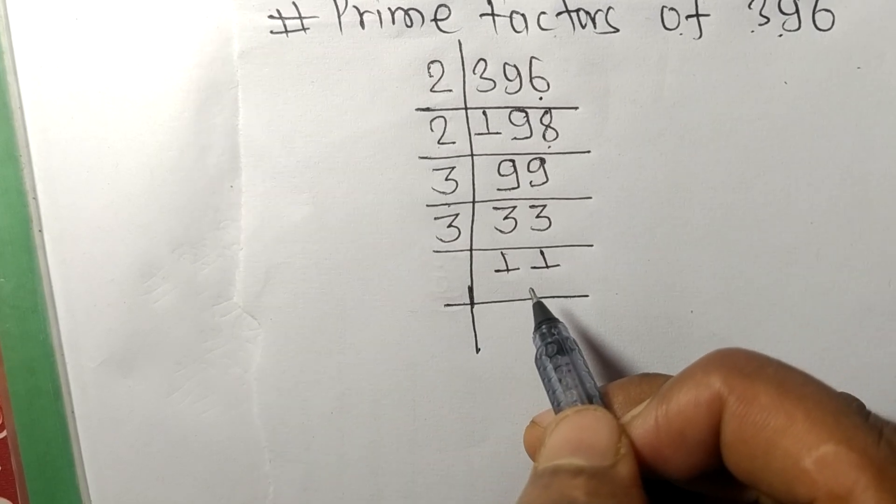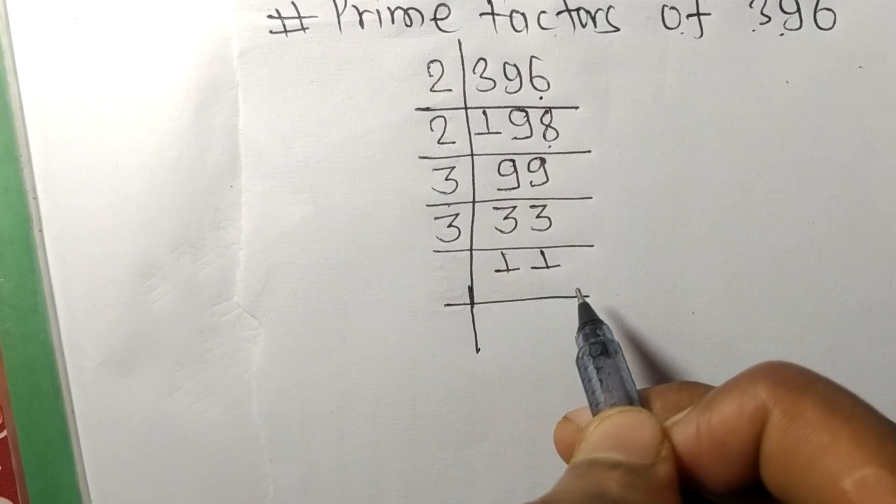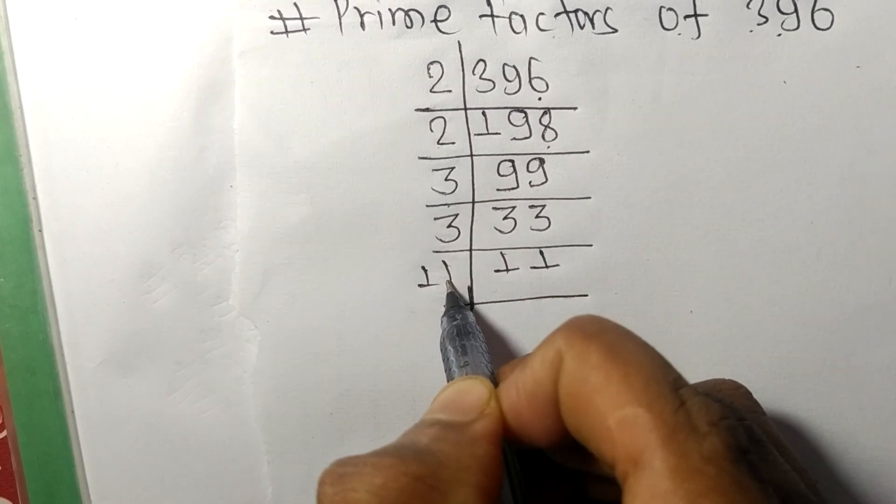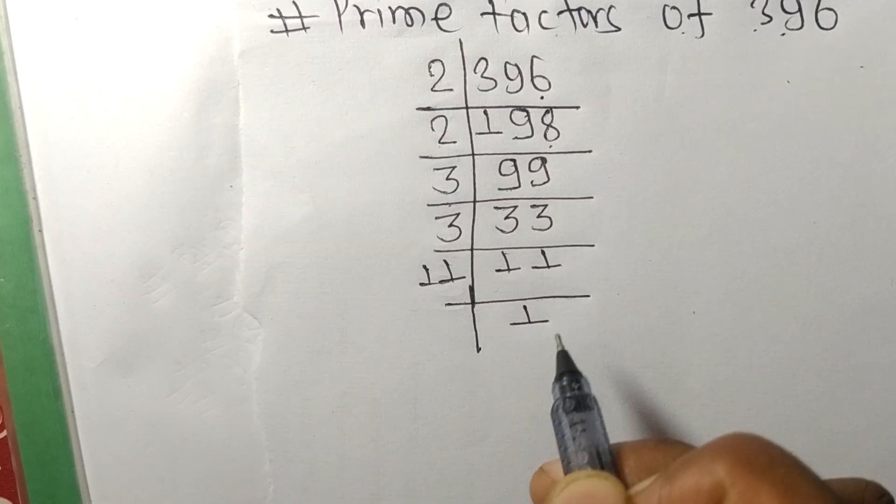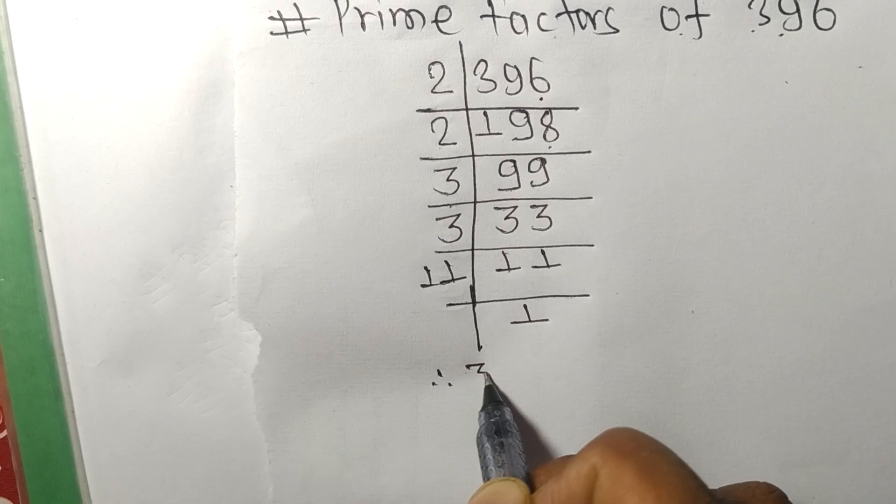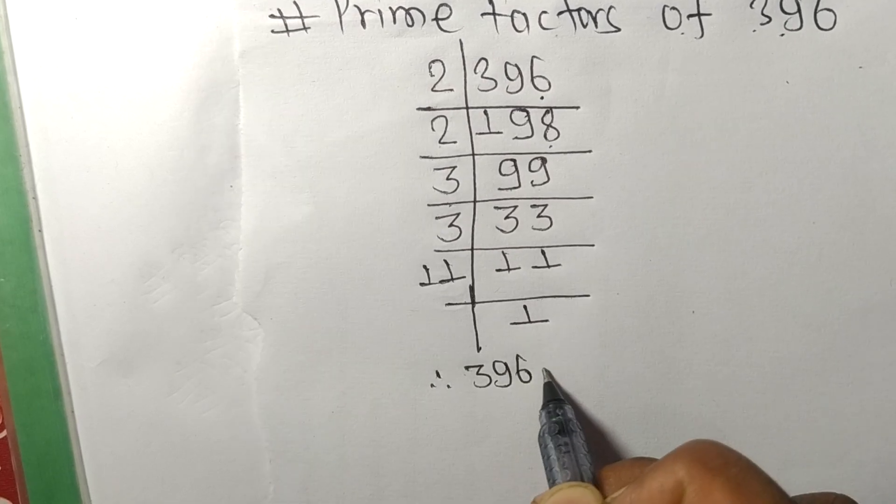11 is our prime number, so it is divisible by 11 itself and we get 1. Therefore, 396 is